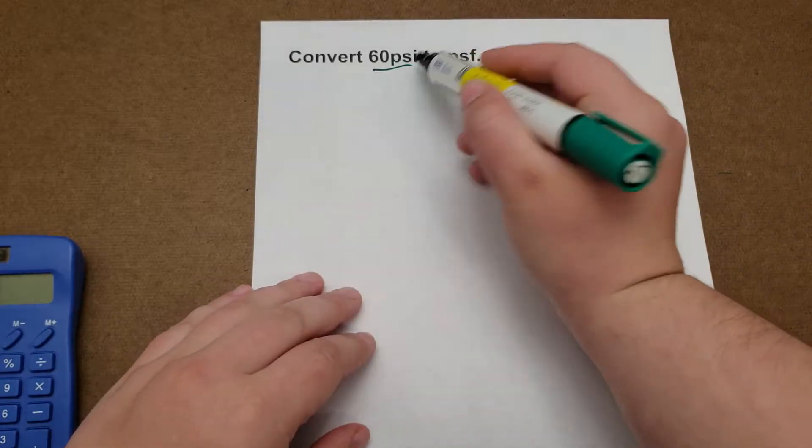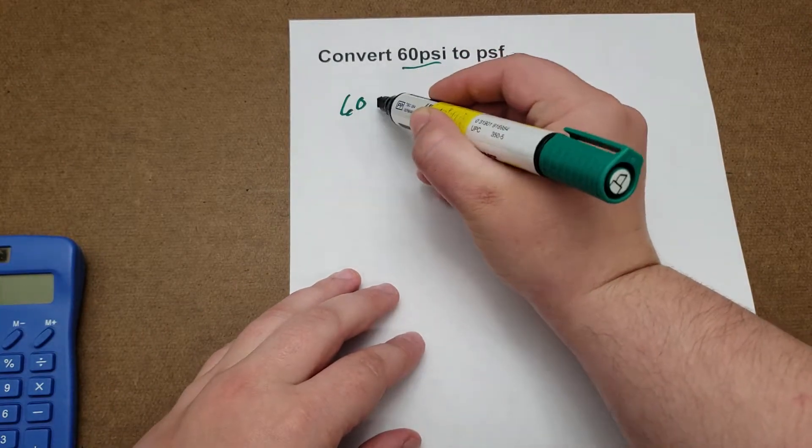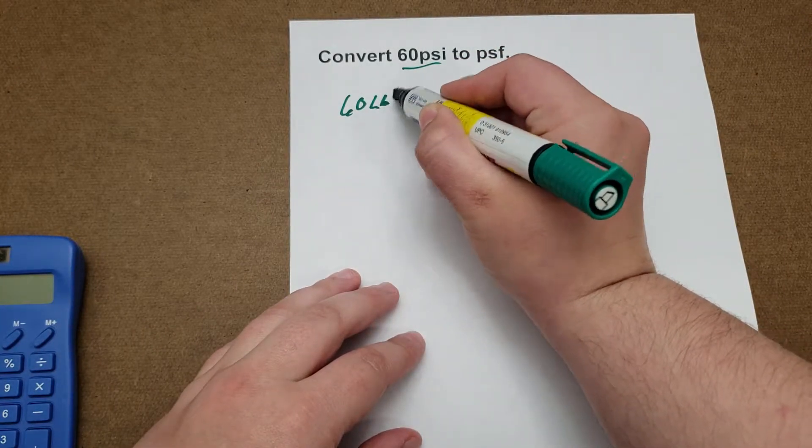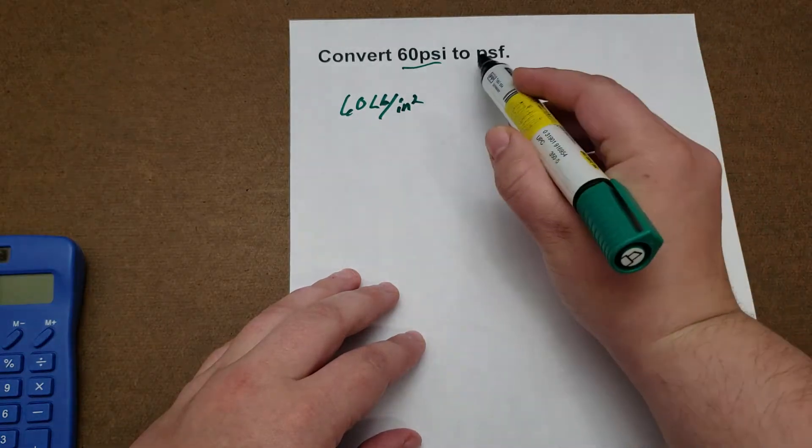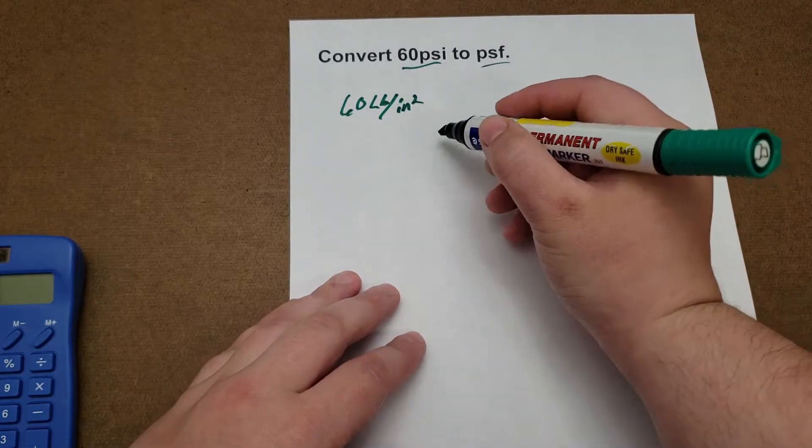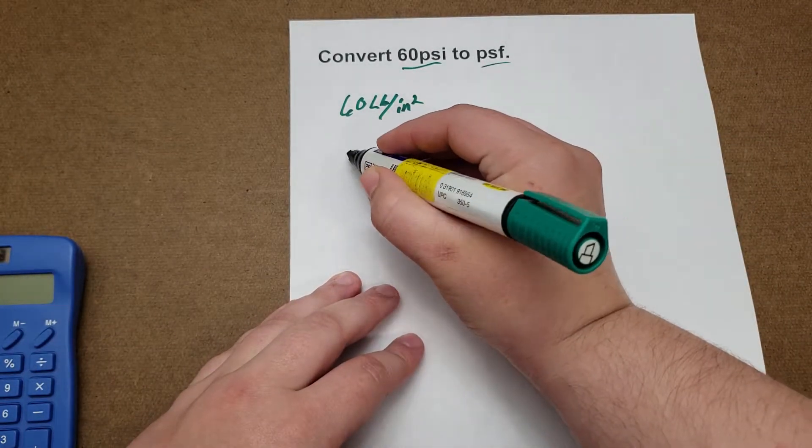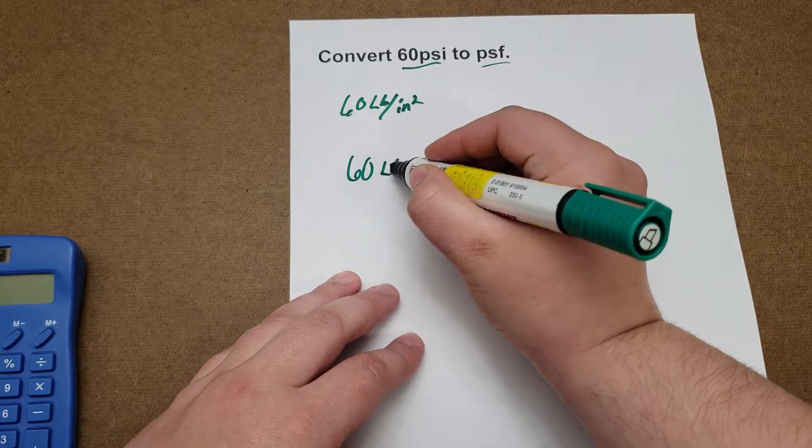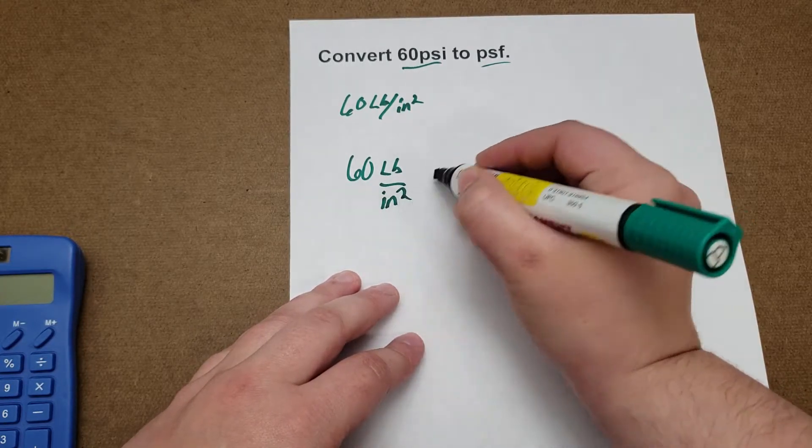So they give us 60 psi, so 60 pounds per inch squared, and they want it in PSF. So we have 60 pounds per inch squared,